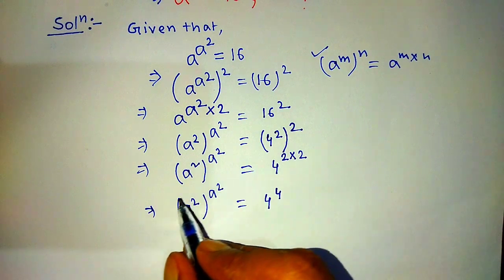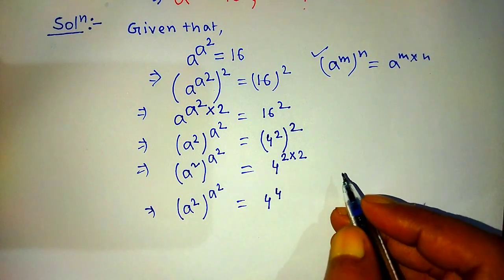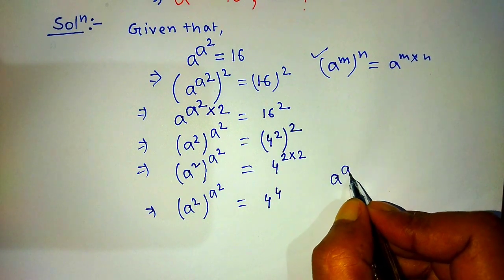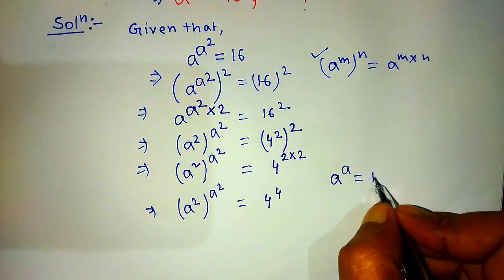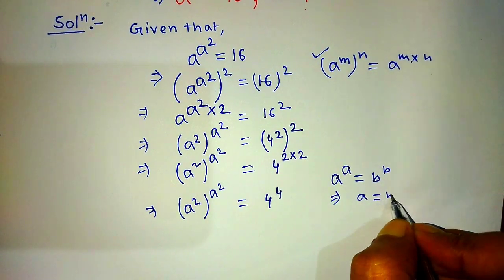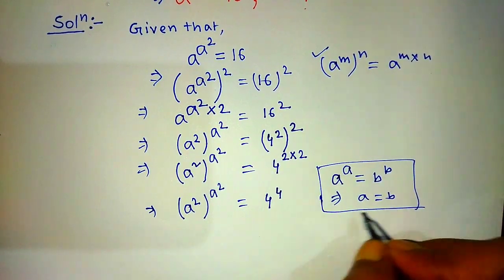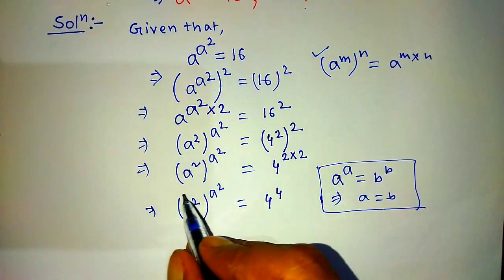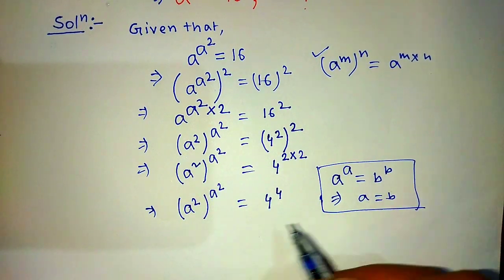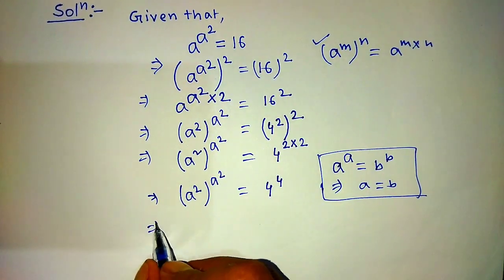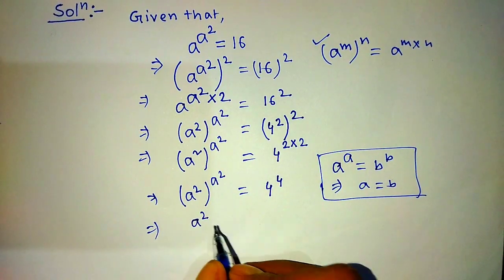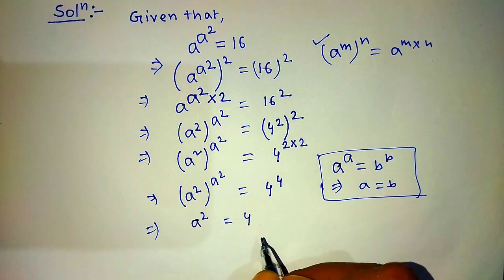To find the value of a from this exponential equation, we apply the formula: a to the power a is equal to b to the power b, implies that a is equal to b. After applying this formula, on the left hand side we get a squared is equal to 4.